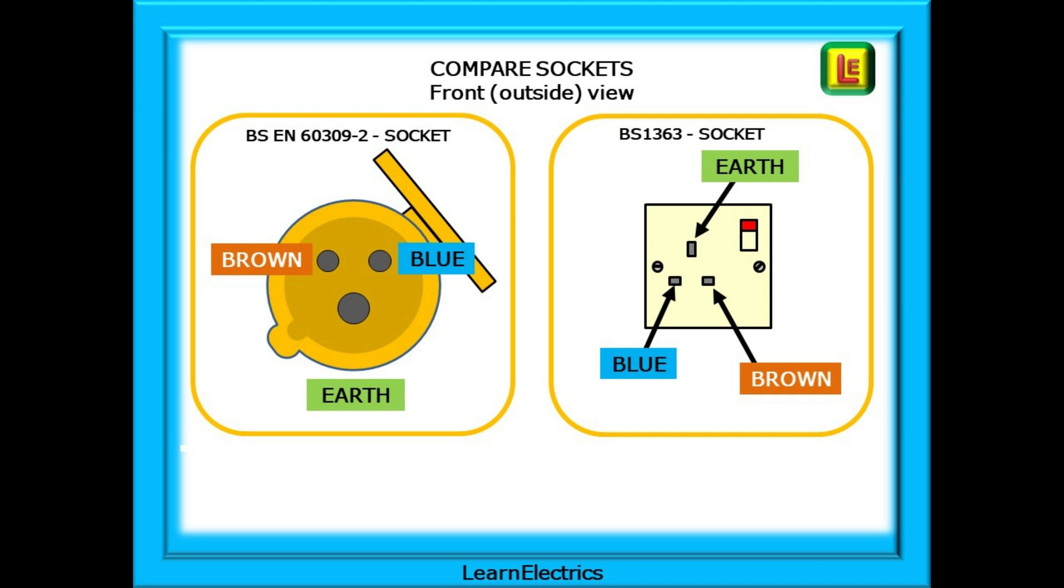Many electricians know that with a BS 1363 three pin domestic socket, the brown or line terminal is always on the right as you look at it on the wall. But now with the BS EN 60309 yellow socket, picture the earth at the bottom and the brown is on the left, whereas the earth is at the top for a BS 1363 domestic socket, it's at the bottom for a yellow 110 volt socket.